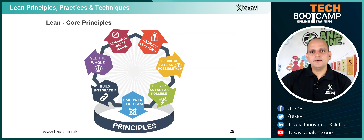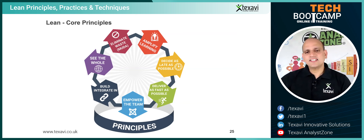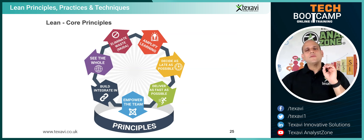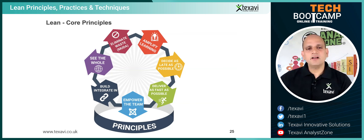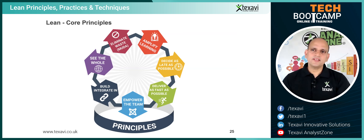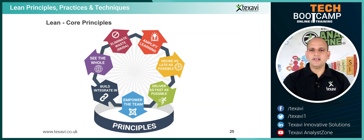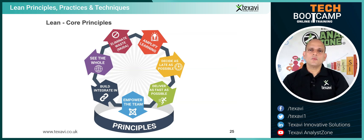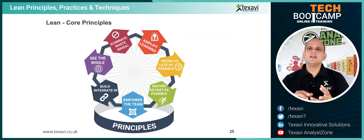If you do not get the big picture, you would never get anywhere near the delivery of your value. And eliminate waste — this is last but not the least, a very fundamental aspect of Lean: eliminate waste. First, identify where the waste is. We are going to look at what kinds of waste exist in software development in the next few slides. Wherever you see waste, eliminate it.